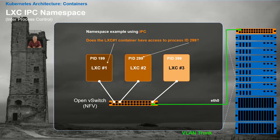The next namespace to drill closer into is IPC — Interprocess Communications. With IPC, if I'm running process 199 on LXC number one, no communications would be possible with process ID 299. In fact, LXC one, if it asks for process 299, would not even be able to see it. So there is no interprocess communications between containers.